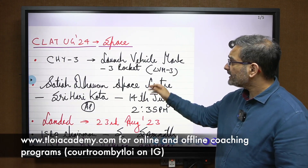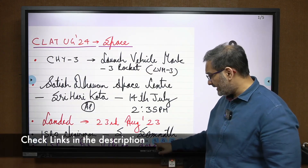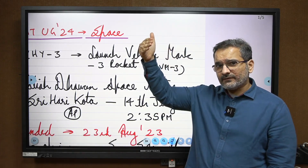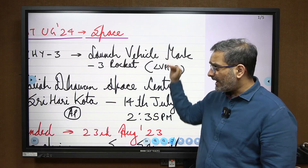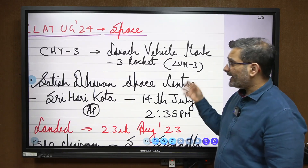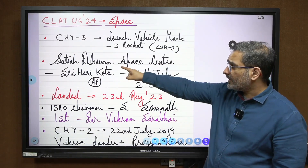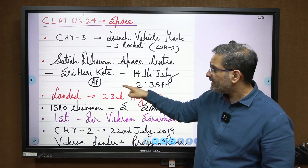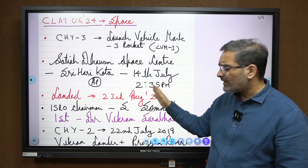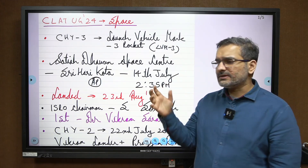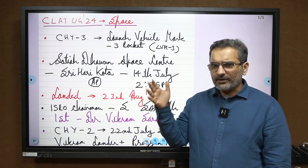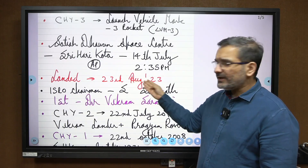Chandrayaan-3 was launched using the LVM3 rocket — that is the Launch Vehicle Mark 3. They can give a paragraph and ask which information has been retracted, or ask one-liner MCQs. The highest probability facts: LVM3 is the launch vehicle. The rocket was launched from the Satish Dhawan Space Center, located at Sriharikota in the state of Andhra Pradesh. The launch date was 14th July at 2:35 PM.